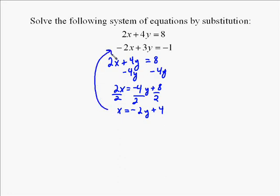So we know we can easily put that in for x in the second equation. So we're going to take negative 2y plus 4 and place that in for x in the second equation. So we get negative 2 times negative 2y plus 4 plus 3y equals negative 1. Now we use distributive property.